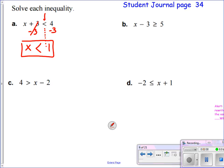And of course, that means that x can vary. It's a variable. So it means any numbers that are less than 1. For letter B, here we would add 3 to both sides and I get x is greater than or equal to 8.